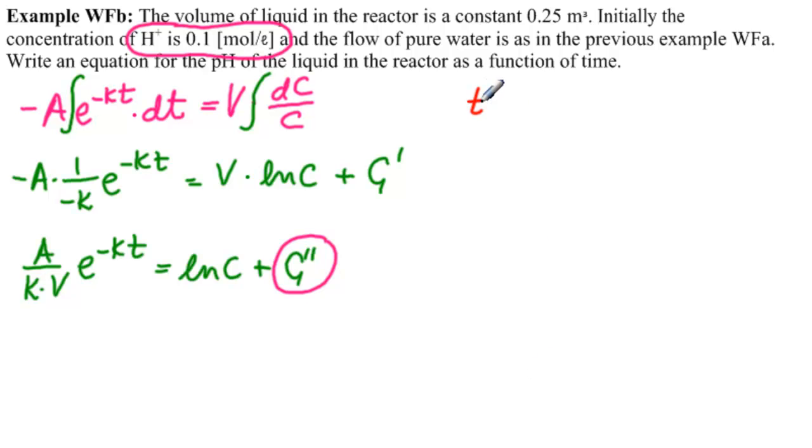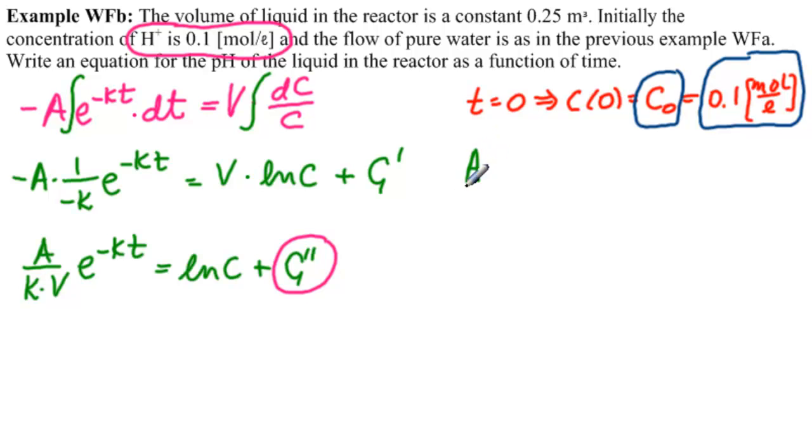At t equal to 0, that's initially, C of t equal to 0 is C0, and in our case it is 0.1 mole per liter. We're going to use this now, and when we get to the end of the problem, we're going to substitute this.